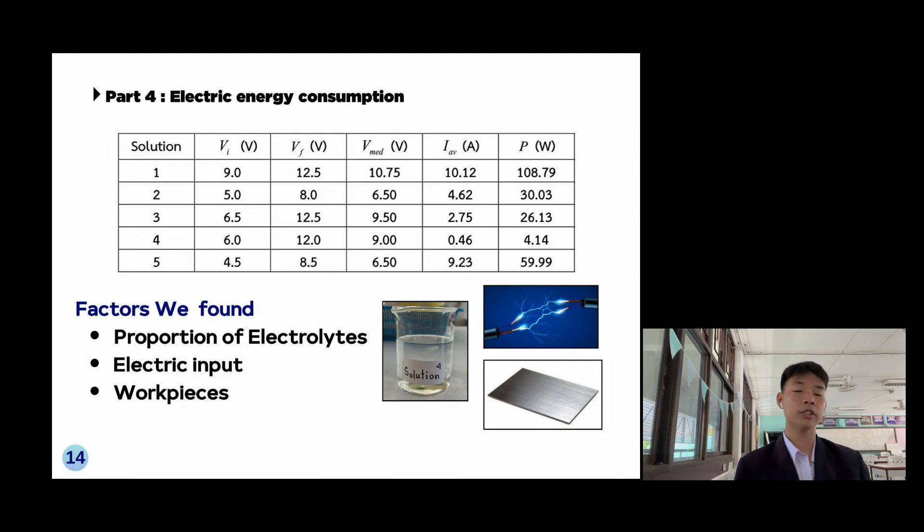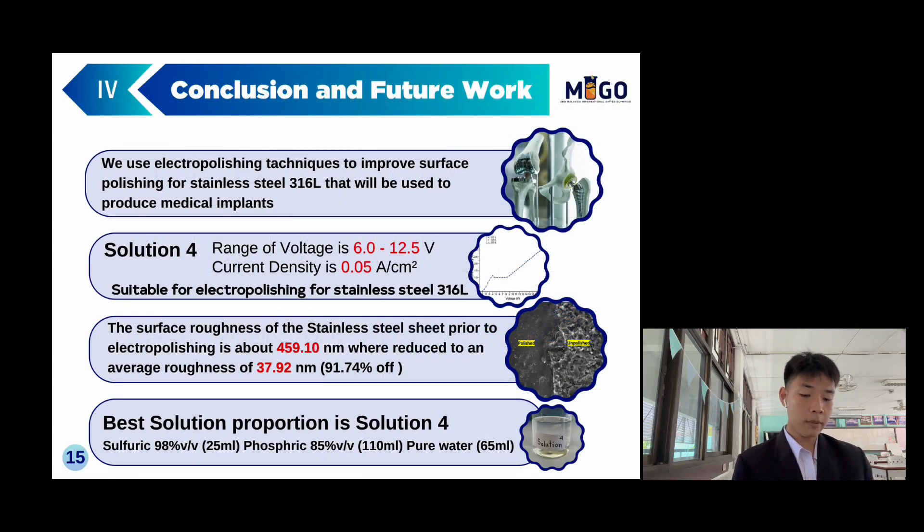This is the conclusion: we use electropolishing technique to improve surface polishing for stainless steel 316L that will be used to produce medical implants. The best solution we conclude is solution 4.